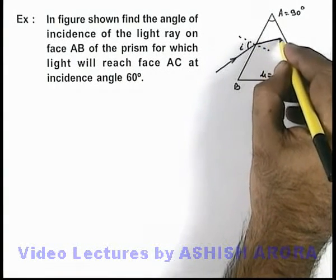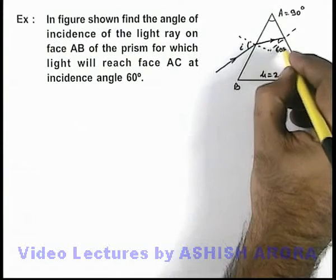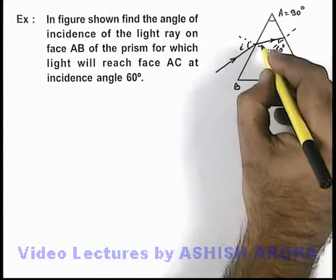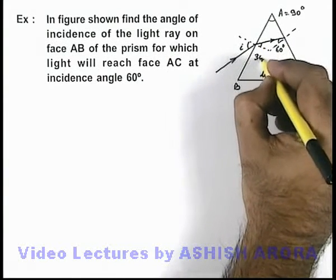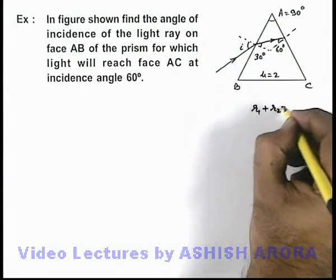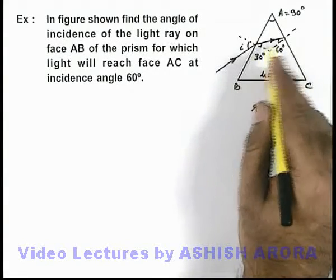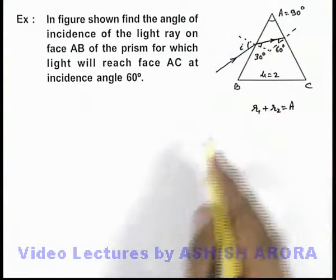After refraction, the light should be incident on the other face at an angle of incidence 60 degrees. If this angle is 60 degrees, this angle must be 30 degrees, because we know here r1 plus r2 is always equal to the prism angle A. If r2 is 60, r1 must be 30, as the sum of these two must be equal to A.